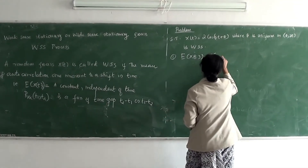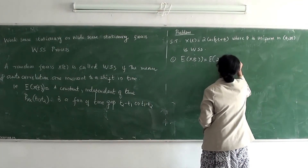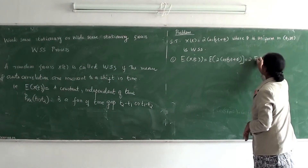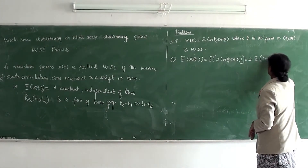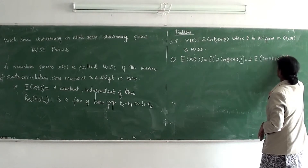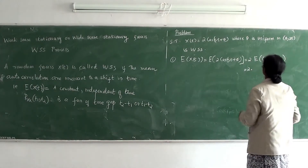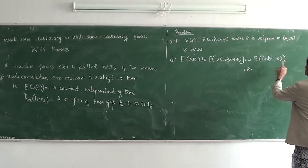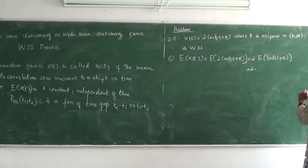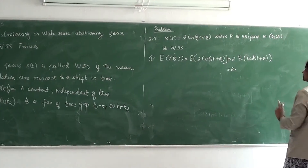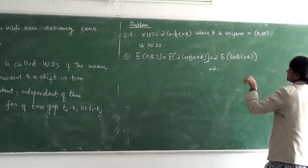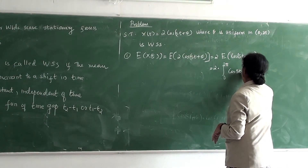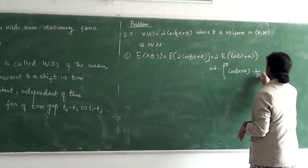The expectation of X(t) is the expectation of 2cos(φt + θ). We can take the 2 outside, giving 2 times the expectation of cos(φt + θ). Since θ is the random variable in the interval 0 to 2π, to find the expectation we integrate from 0 to 2π: cos(φt + θ) times (1/2π) dθ.